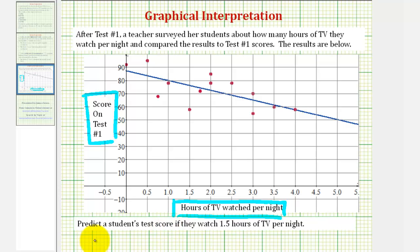For this problem, we're asked to predict a student's test score if they watched 1.5 hours of TV per night. To make this prediction, we'll use the line of best fit.